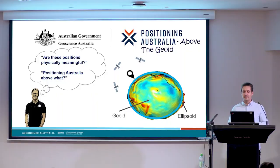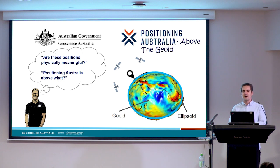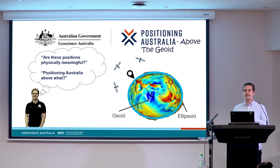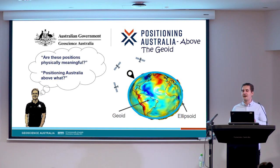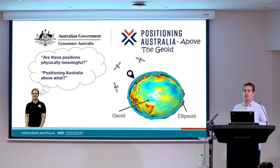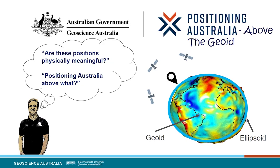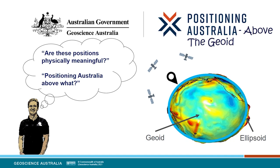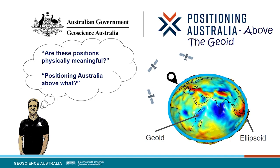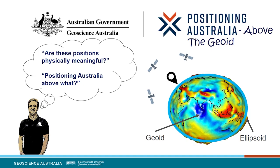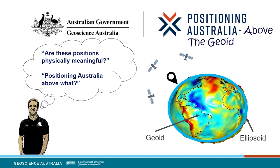But for determining physically meaningful heights, this is only really half the story. GPS positions are often given relative to an ellipsoid — a nice, easy-to-define, smooth and flat geometrical shape. But these positions are not completely related to the Earth's gravity field. Because of this, GPS heights are not physically meaningful and cannot be used to predict how water will flow.